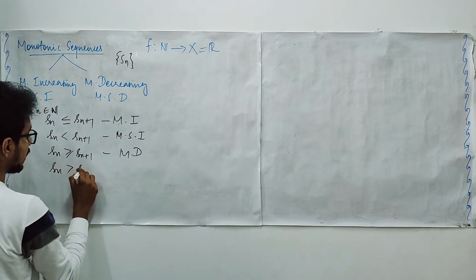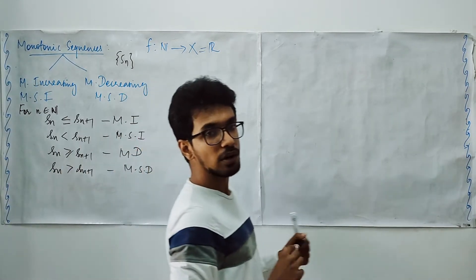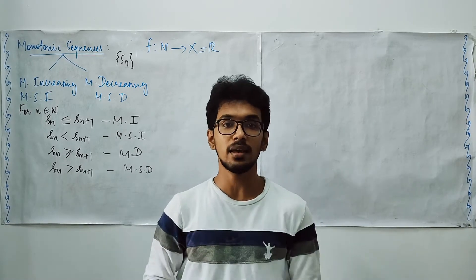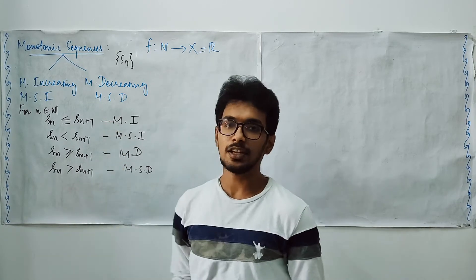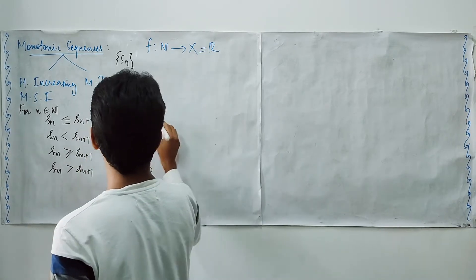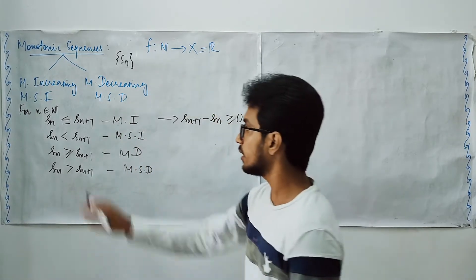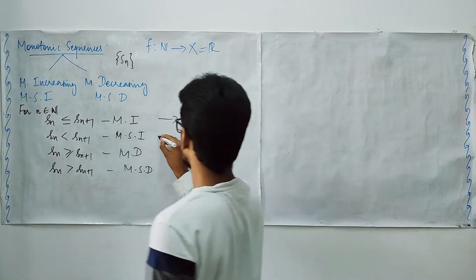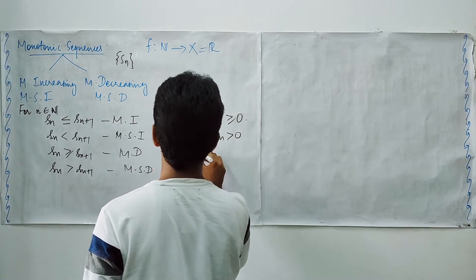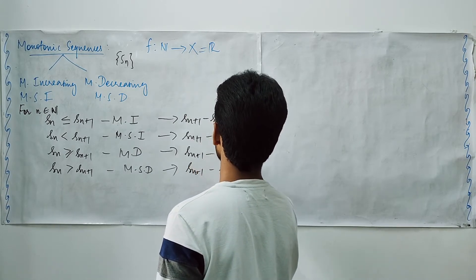Similarly, S_n greater than or equal to S_{n+1} is monotonically decreasing, and S_n greater than S_{n+1} is monotonically strict decreasing. Whenever we are asked to check whether a sequence is monotonically increasing or decreasing, we use these definitions. These may also be written in difference form: S_{n+1} minus S_n greater than or equal to 0, or strictly greater than 0, or less than or equal to 0, or strictly less than 0, corresponding to each case.